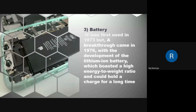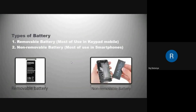The next hardware component is the battery. It was first used in 1973, but a breakthrough came in 1976 with the development of the lithium-ion battery, which offered a higher energy-to-weight ratio and could hold a charge for a long time. There are two types of battery — the first one is the removable battery, which is mostly used in older phones.